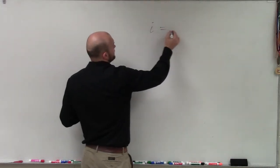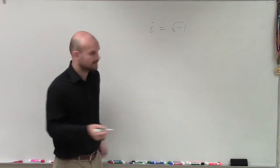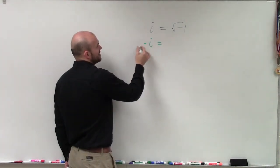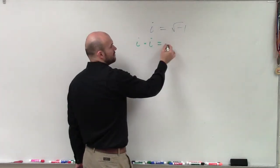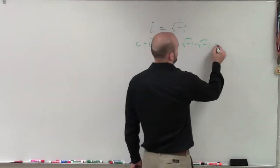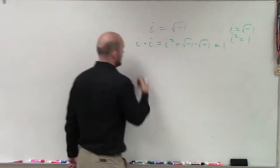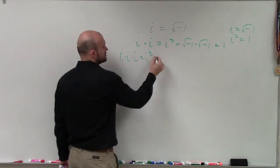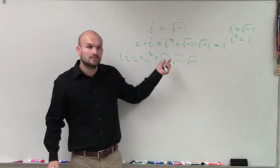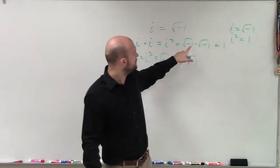Now, if we know that i equals the square root of negative 1, let's go up the ladder. If i multiply i by i, that gives i squared, which equals the square root of negative 1 times the square root of negative 1. The square root of negative 1 times the square root of negative 1 is negative 1. So i squared equals negative 1.